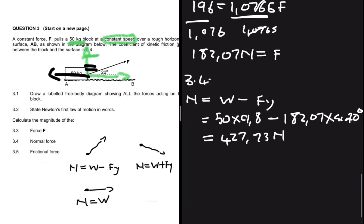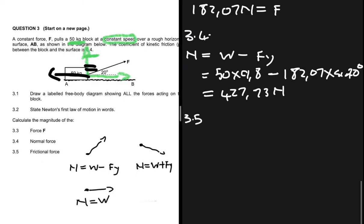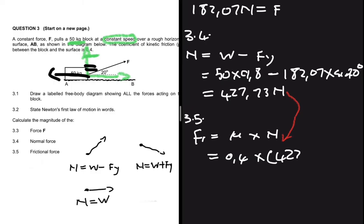Finally, question 3.5 asks for the frictional force. Frictional force equals the coefficient of friction multiplied by the normal force: 0.4 × 427.73, which equals 171.09 newtons.